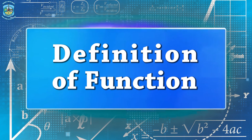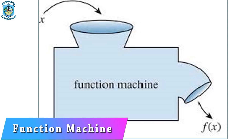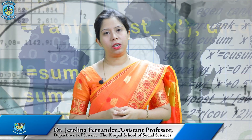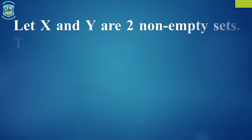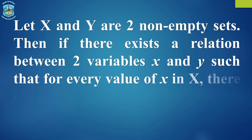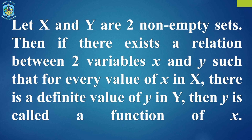Now we are going to talk about the definition of function. Consider a machine called a function. This machine has a restriction that to each input there is exactly one output. There is an input which we call x and an output which we call y. We define function as: let X and Y be two non-empty sets. Then there is a relation between X and Y such that for every value of x in X, there is a definite value of y in Y. Then y is said to be the function of x. This functional value is often denoted by y = f(x), where f denotes the function, y denotes the dependent variable, and x denotes the independent variable.